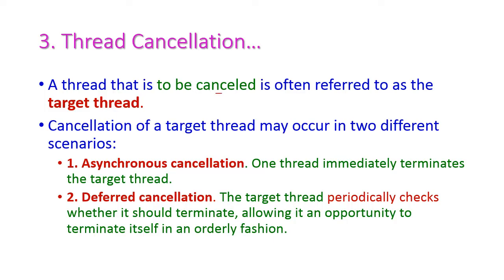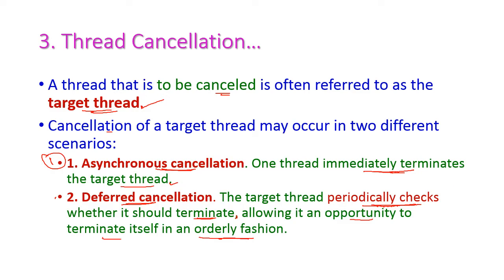The thread to be cancelled is called the target thread. Cancellation may occur in two scenarios. The first is asynchronous cancellation, where the thread immediately terminates the target thread. The second is deferred cancellation, where the target thread periodically checks whether it should be terminated, or is allowed an opportunity to terminate itself in an orderly fashion. These are the two scenarios for cancelling a thread.